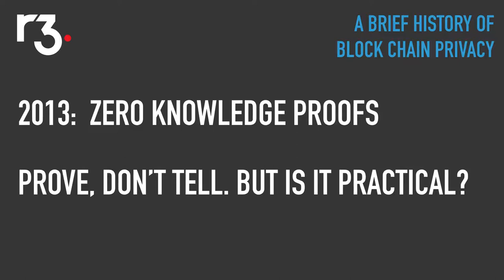Not much really happens until around 2013. A team from a technical university in Israel comes to a Bitcoin conference and gives a presentation on zero-knowledge proofs and they make some remarkable claims. They claim that you can take any statement about a thing — for example, you could say this financial transaction is valid and follows the rules of the system — and you can create a mathematical proof of it, but you don't have to reveal the underlying information. You can reveal that you know something without revealing everything about what you know.